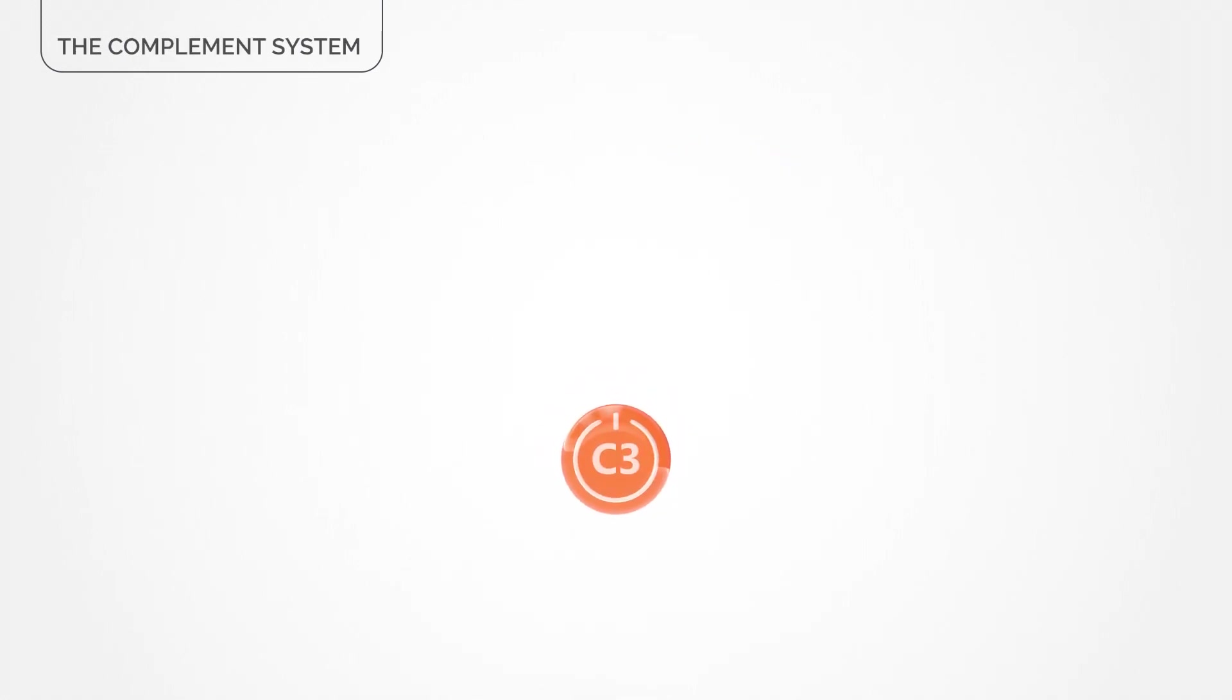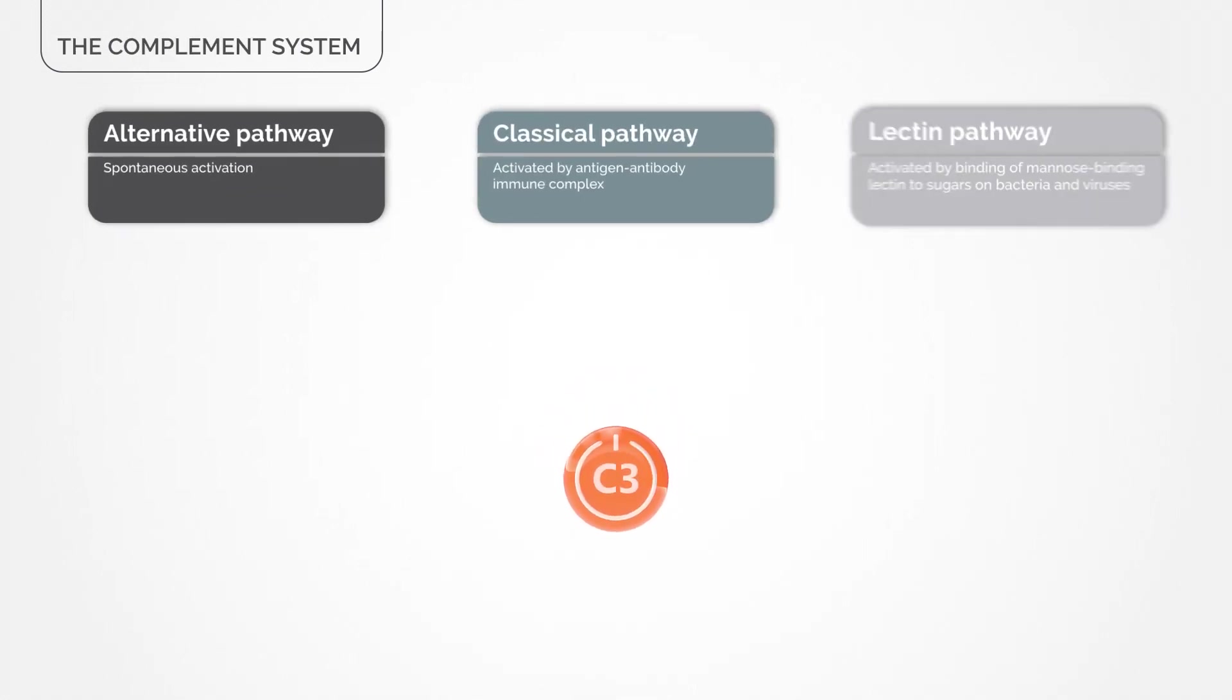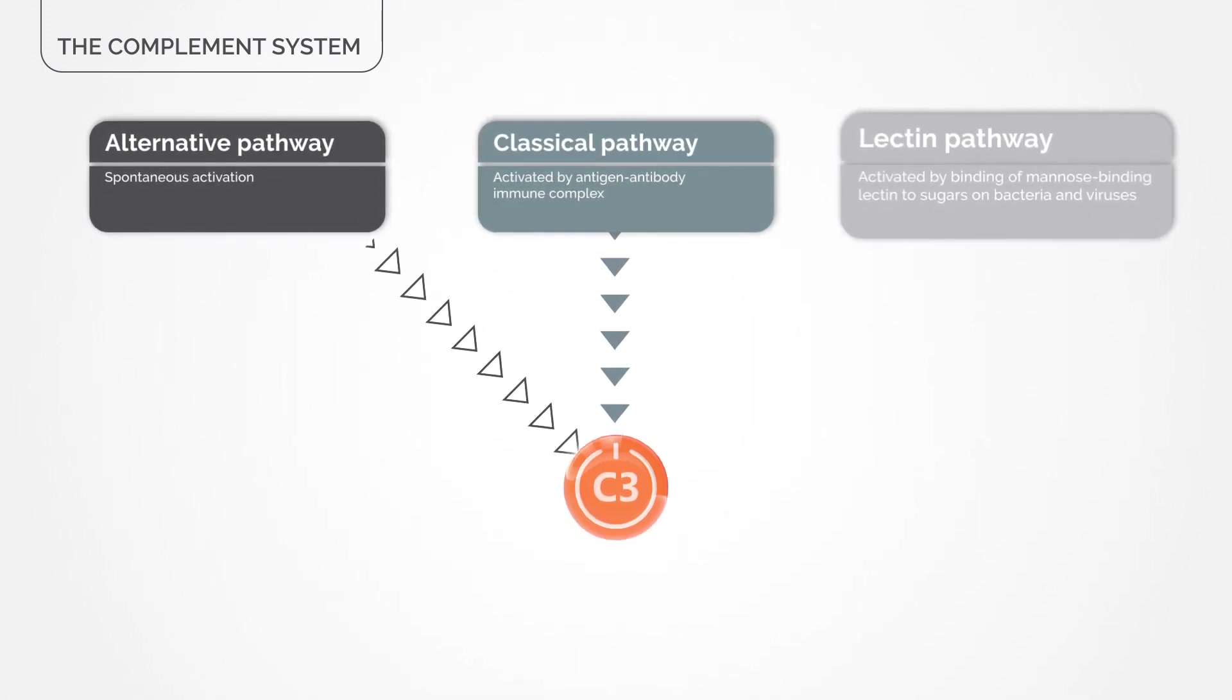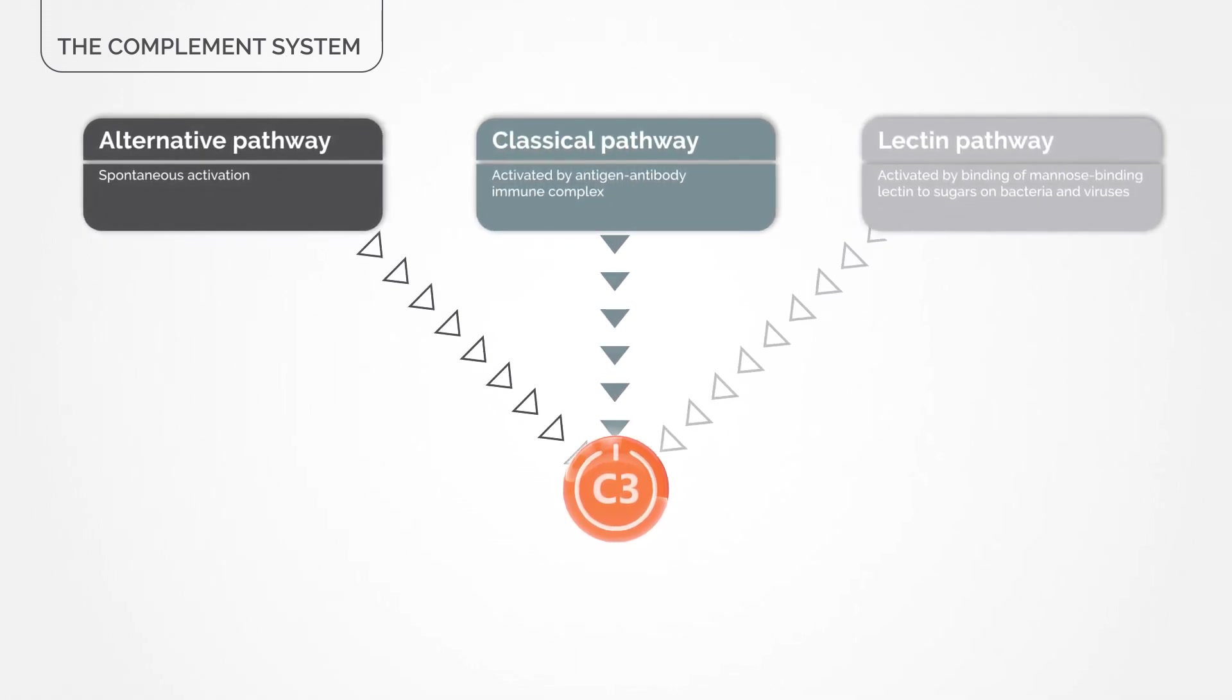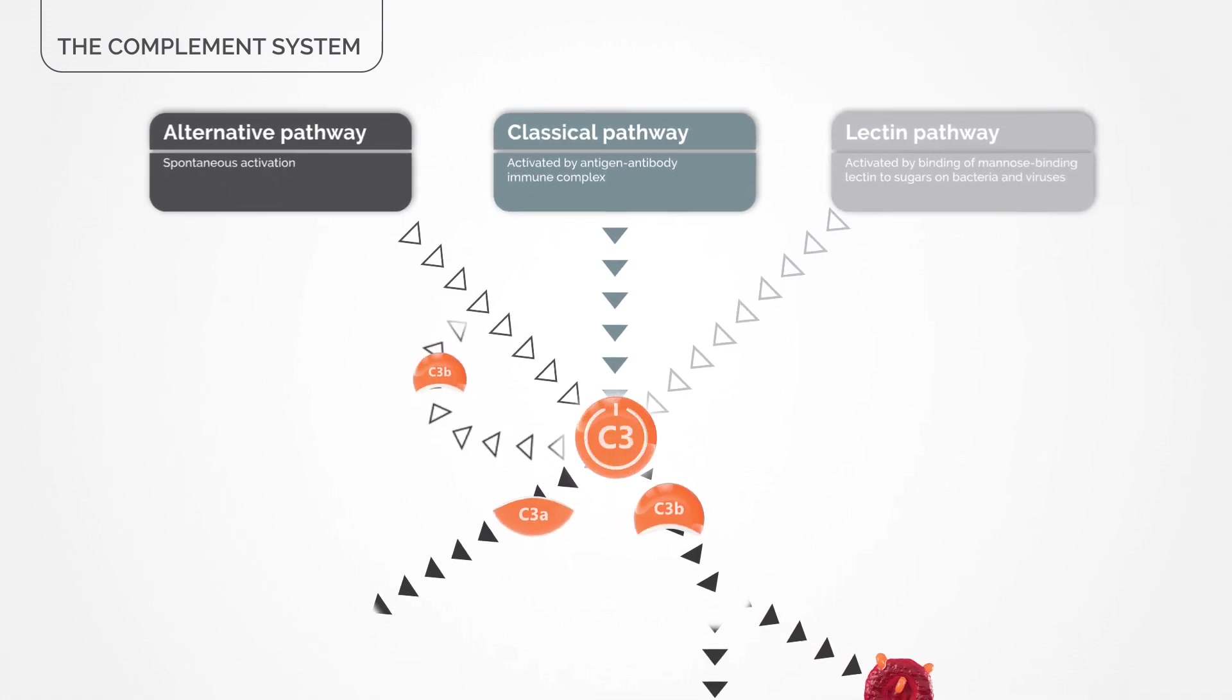The complement system may be activated by three different pathways: the alternative, classical, and lectin pathways that all run through complement C3, the central protein in the cascade.